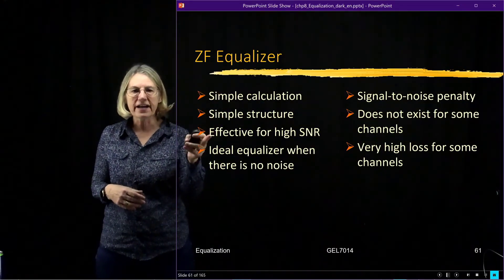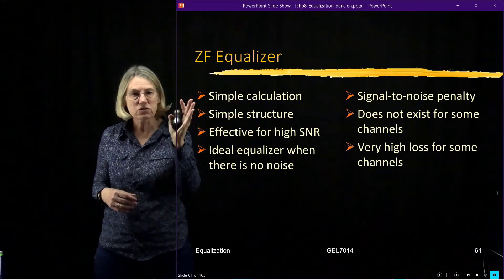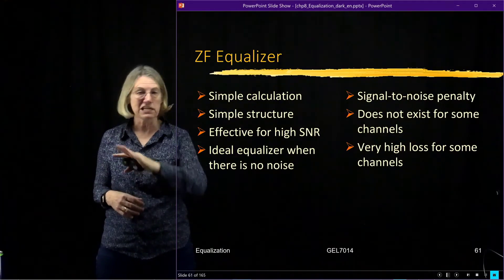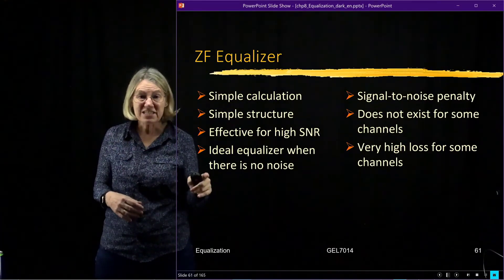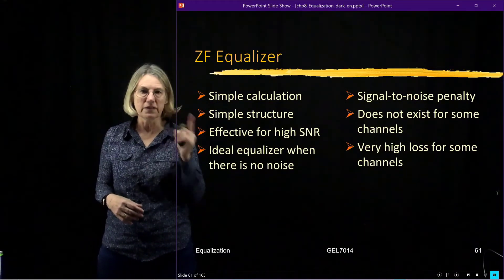It's very effective for high signal to noise ratio. If my signal's very strong and my noise is very low, the fact that I'm enhancing it doesn't matter. In fact, if there is no noise, the ideal linear equalizer would be the zero forcing one.